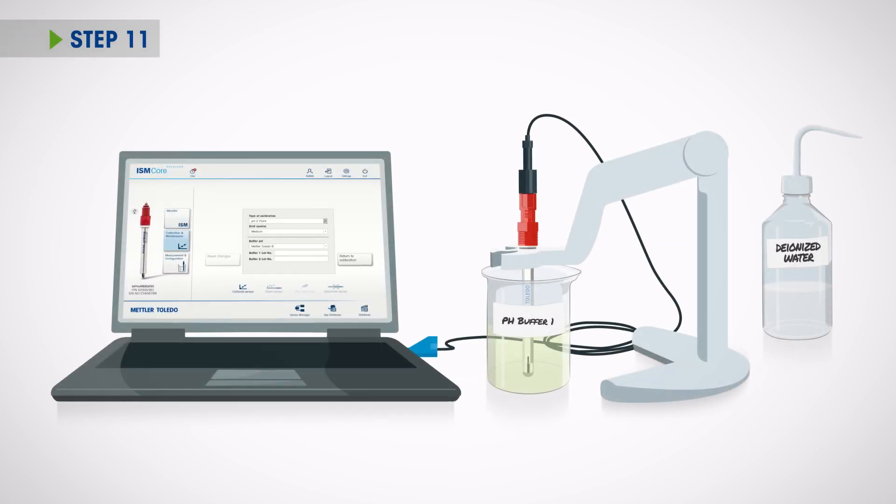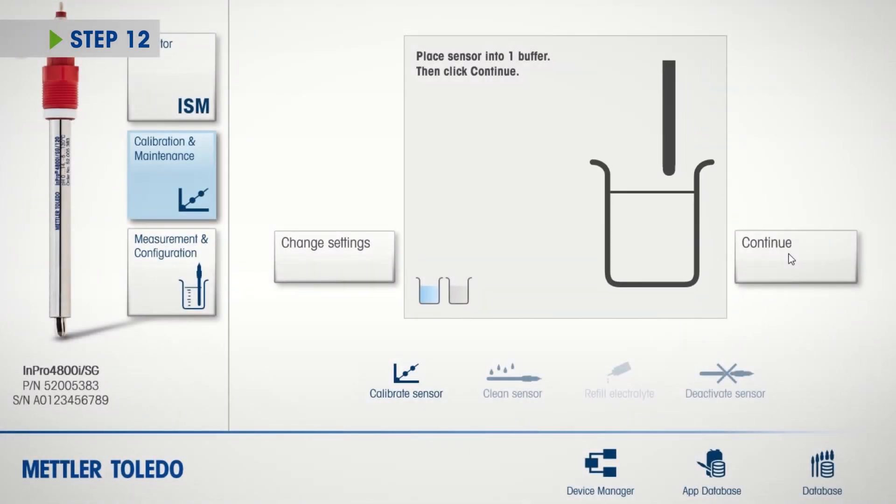Click on Calibration and Maintenance to begin calibration. Following the on-screen instructions, place the sensor into the first buffer and click Continue. Wait until you see the checkmark to confirm the first buffer reading.